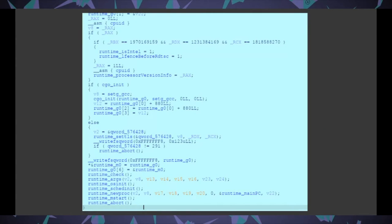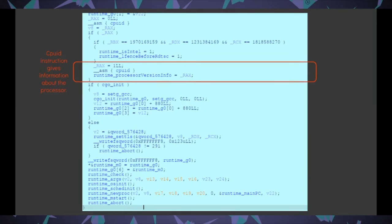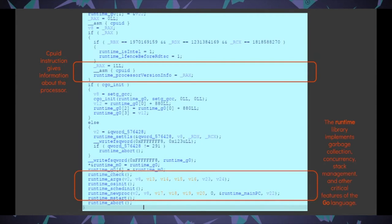This is the IDA view of the runtime_rt0_go function. We see a CPUID instruction, which tells us information about the processor — depending on the EAX bits, it sets other bits accordingly. For example, if EAX is zero it gives vendor information, and if it returns runtime is Intel, it sets the Intel flag. We also see many runtime functions. The runtime library is part of every Go program and implements garbage collection, concurrency, stack management, and other critical features.